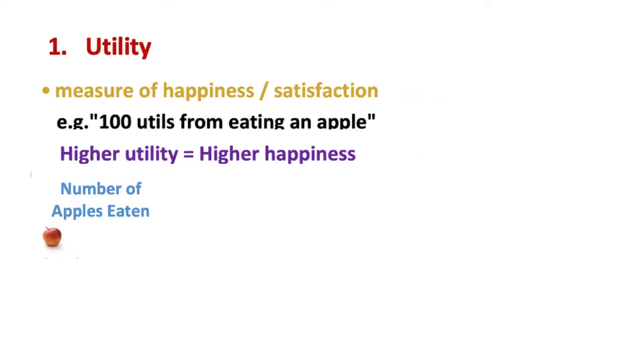Now suppose you eat your first apple and it gives you 100 utils. Then you eat a second apple and your total amount of utility is now perhaps 120 utils. In other words, as expected, you are happier after eating two apples than one. The increase in the total utility of 20 is what is known as the marginal utility of eating the second apple.